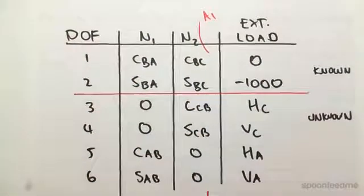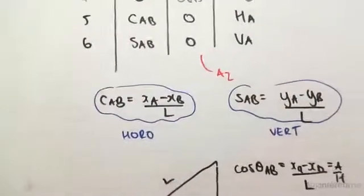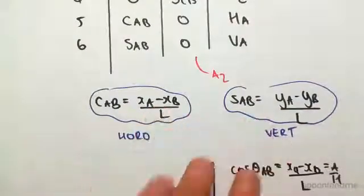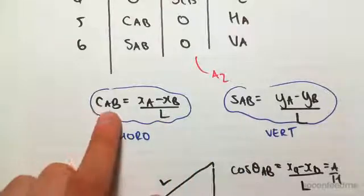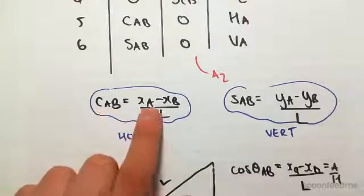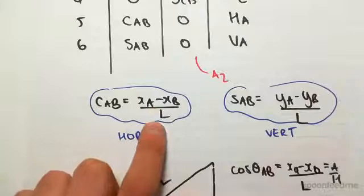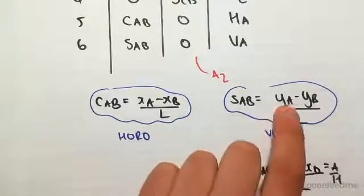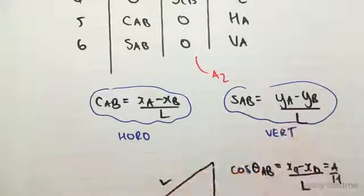Okay, so now we're going to go and find the values. To do this, we're going to be using these two formulas here for cos and sine. So for example, cos AB, you go xA minus xB over L. Sine AB is yA minus yB over L.